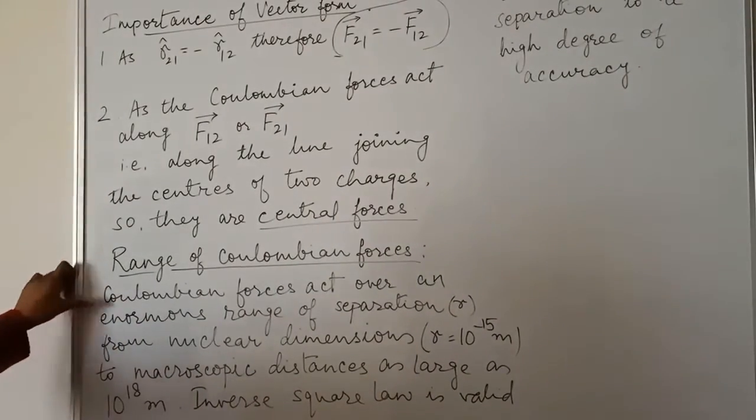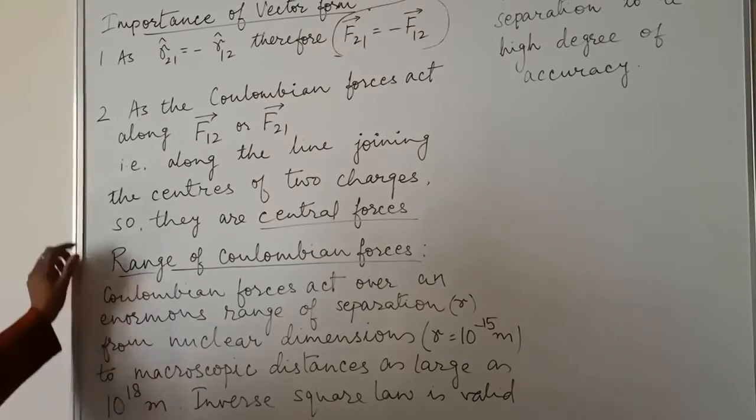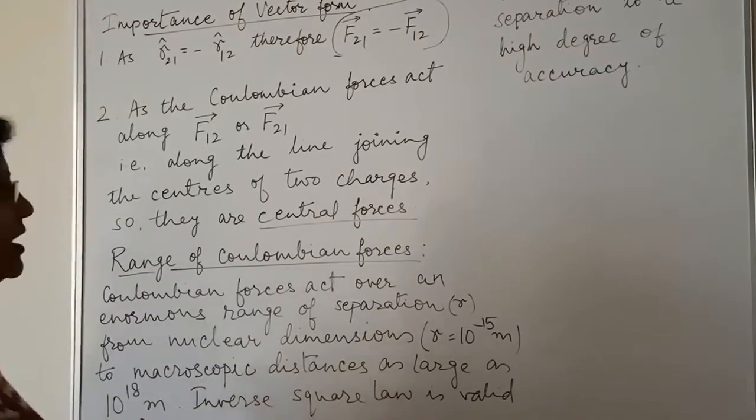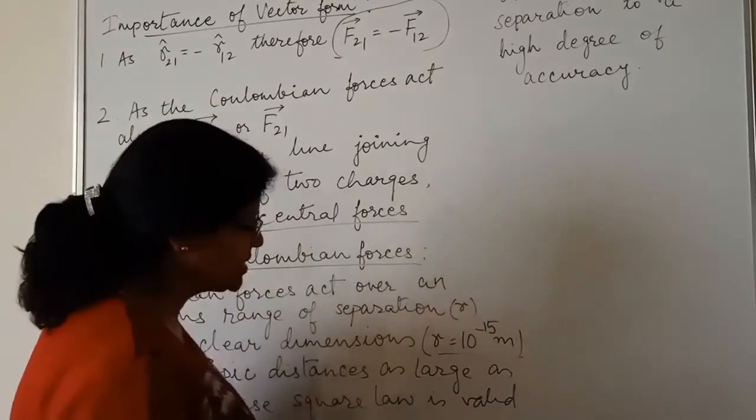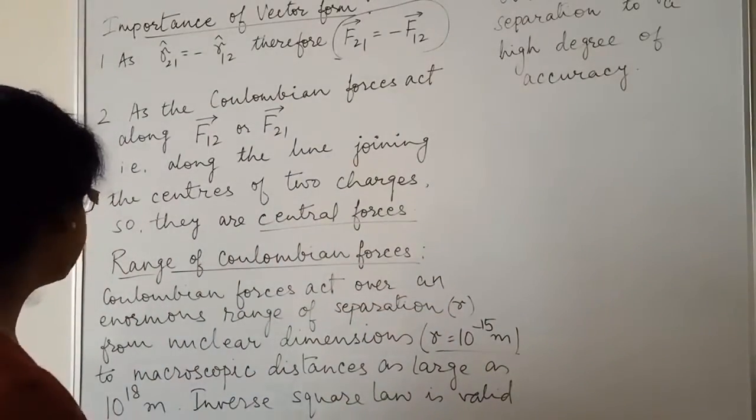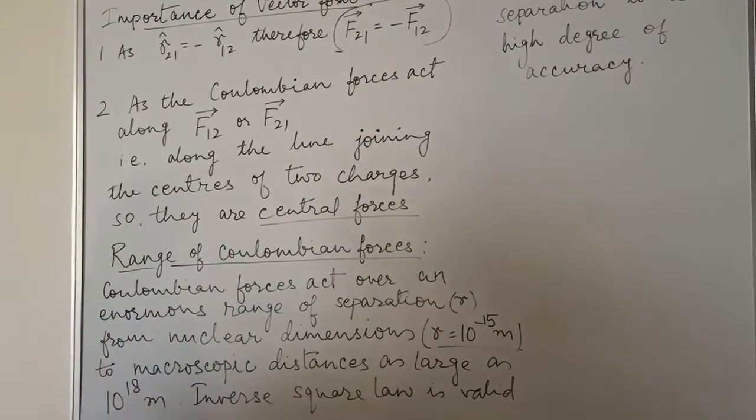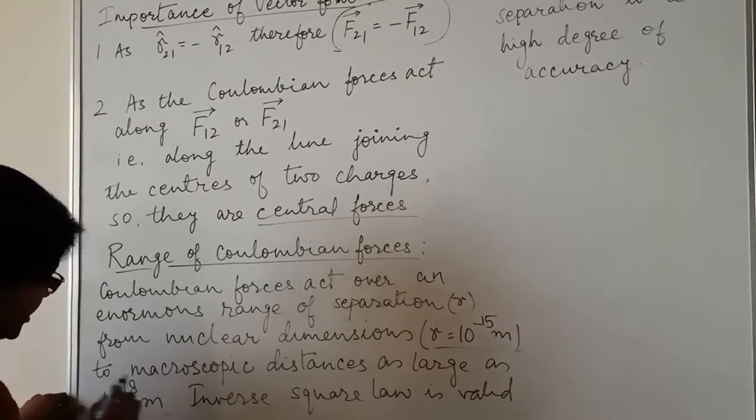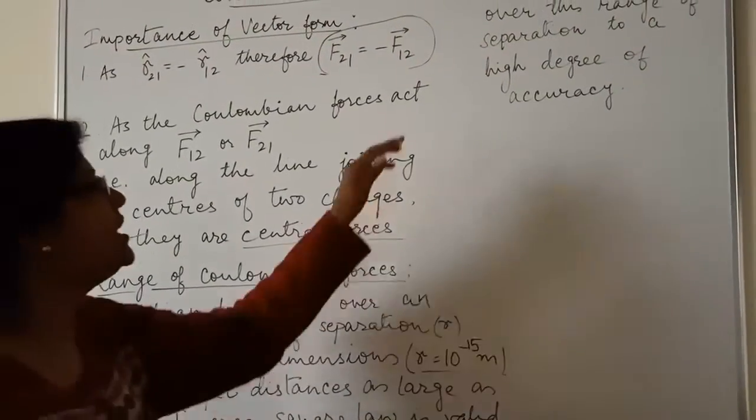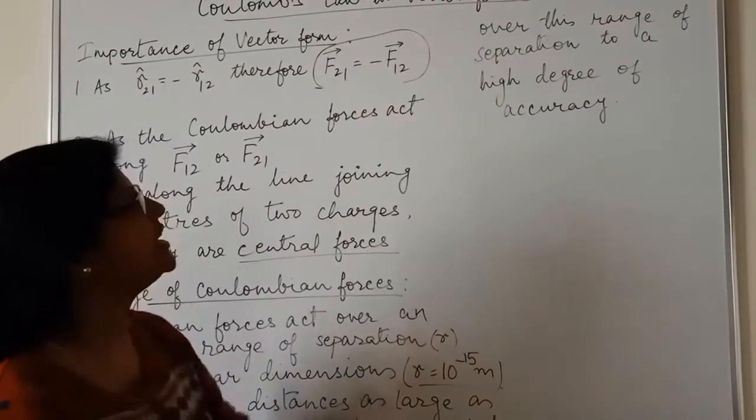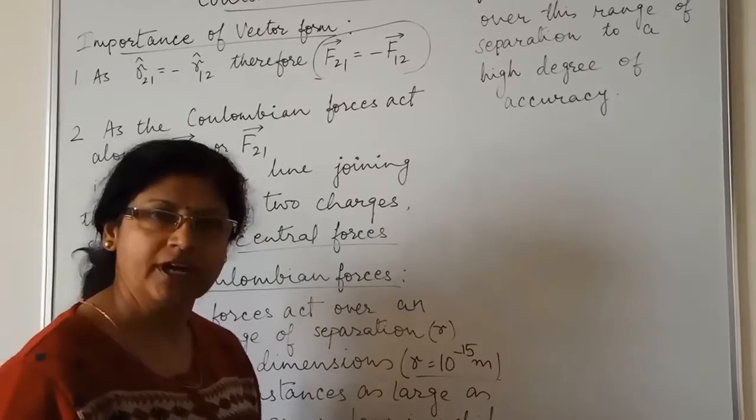Coulombian forces act over an enormous range of separation from nuclear dimensions, R is equal to 10 to the power minus 15 meter to macroscopic distances as large as 10 to the power 18 meter. Inverse square law is valid over this range of separation to a high degree of accuracy.